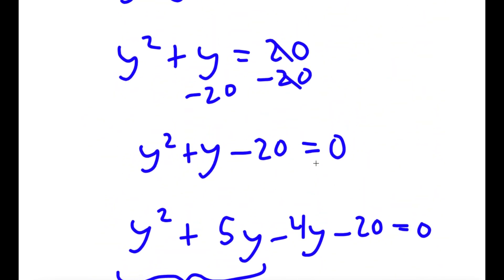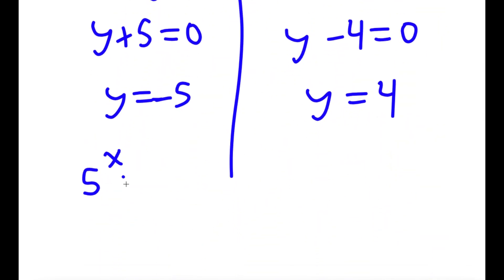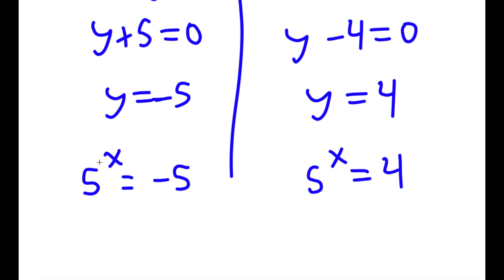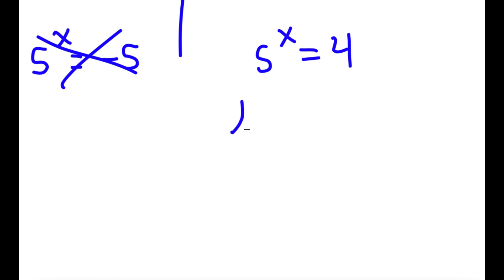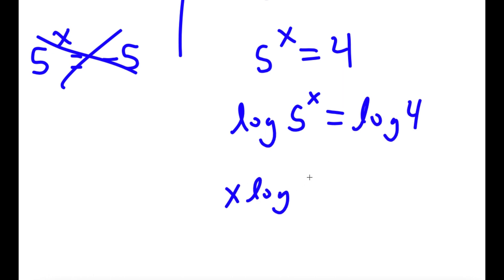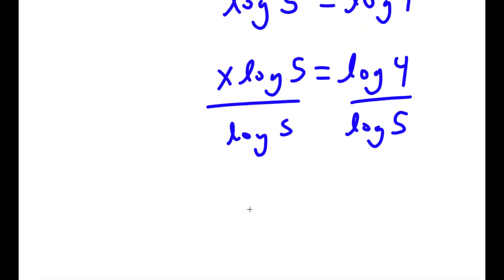Now remember how we let 5 to the power of x equal to y. This gives two equations: 5 to the power of x equals negative 5, and 5 to the power of x equals 4. For the first one, I can't take the power of a positive number and make it negative, so this equation is invalid. That leaves 5 to the power of x equals 4. Taking the log on both sides: x times log 5 equals log 4, so dividing both sides by log 5 gives x equals log 4 over log 5.